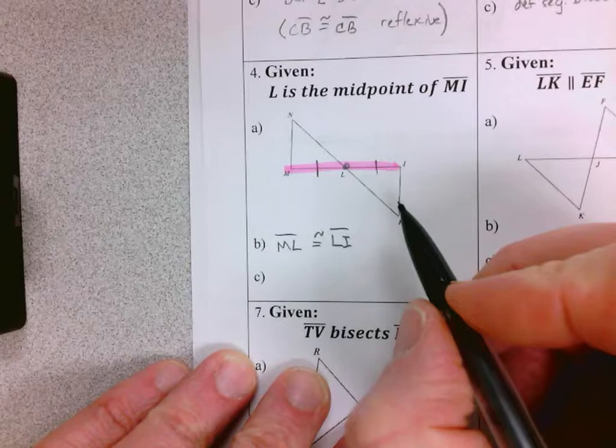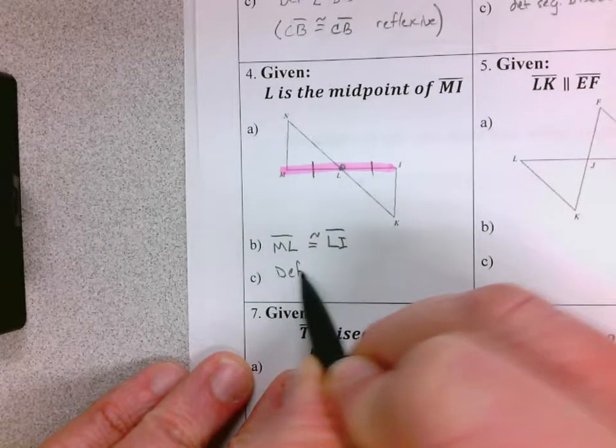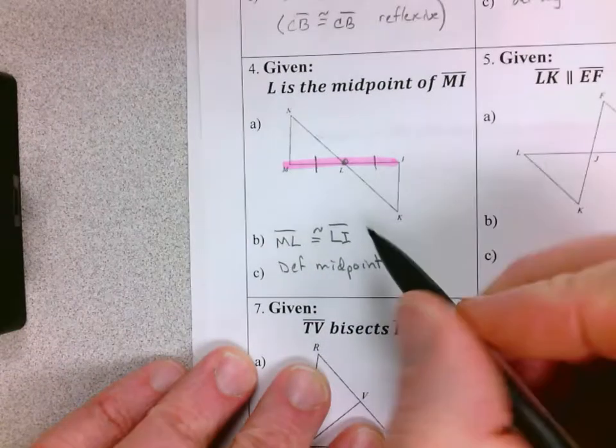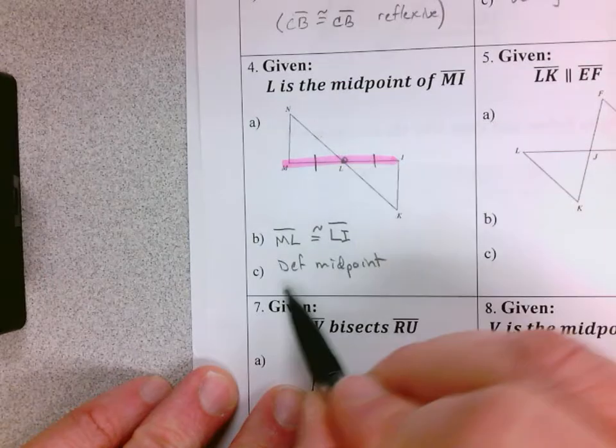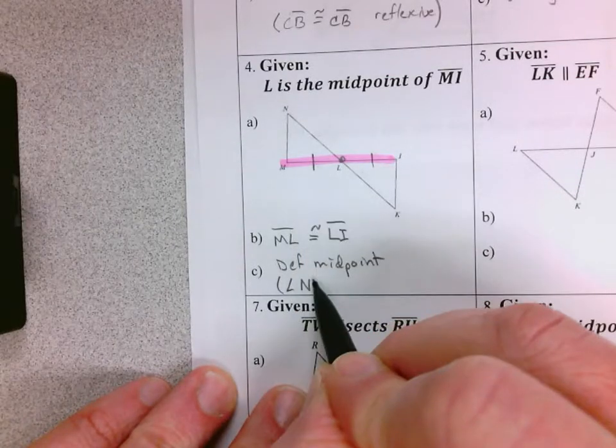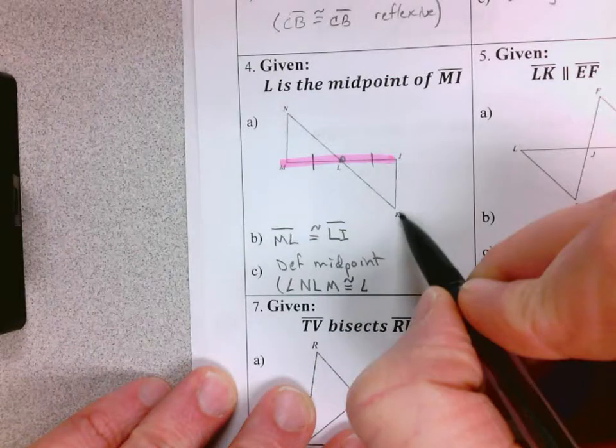Write your statement: ML is congruent to LI by definition of midpoint. The other thing that if you're doing a proof that you would see here, and I'm going to add that as extra information, is angle NLM is congruent to angle KLI.